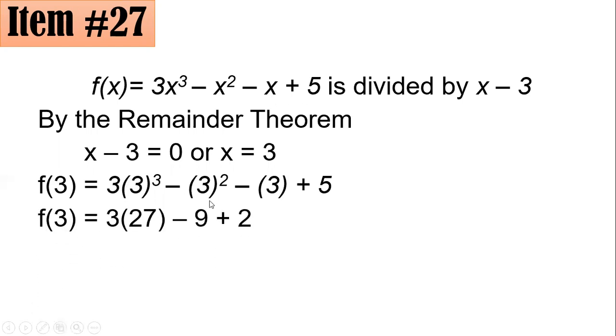Simplifying it, this is 27. 3 squared is 9. Negative 3 plus 5 is 2. 3 times 27 is 81. So you have 81 minus 9 plus 2 is 7, negative 7. So 81 minus 7 gives you 74.